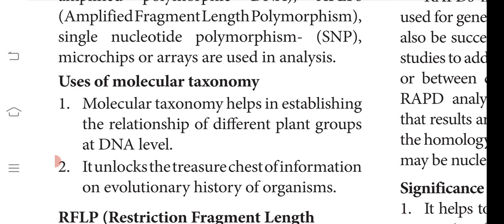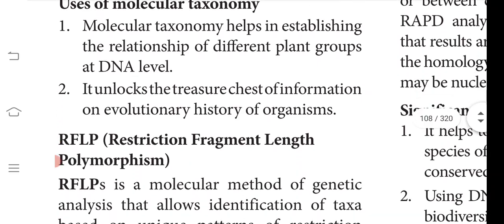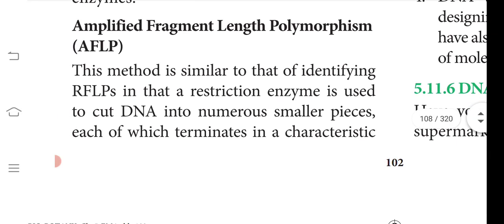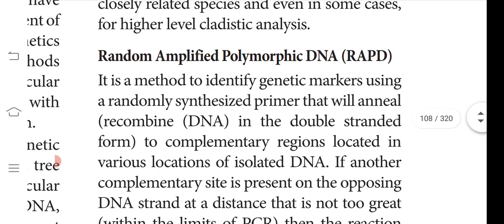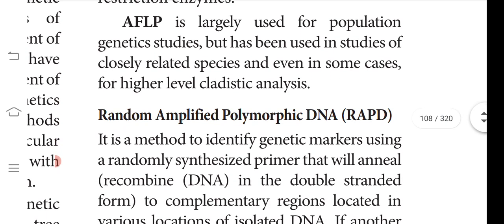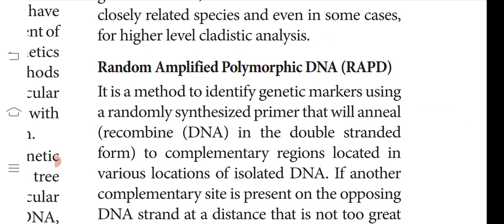RFLP is a molecular method of genetic analysis that allows identification of taxa. AFLP is a similar method where a restriction enzyme is used to cut DNA into smaller pieces, each of which carries the characteristic feature of that particular plant. AFLP is largely used for population genetics but has also been used to study closely related species and even higher levels of cladistics, which is a phylogenetic tree.